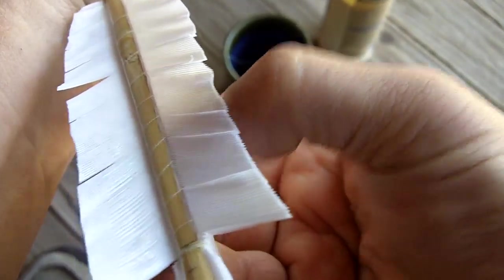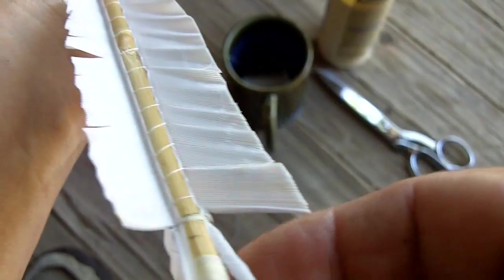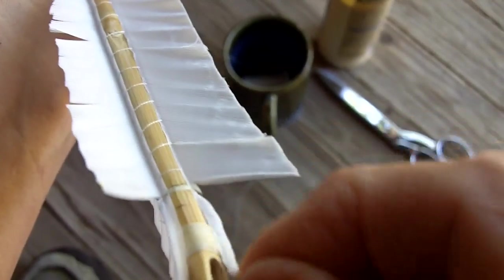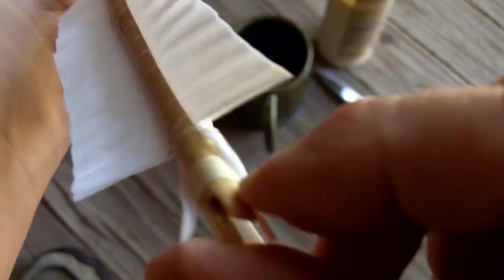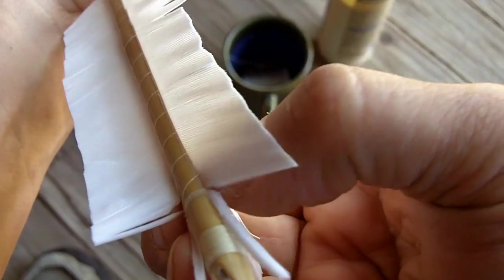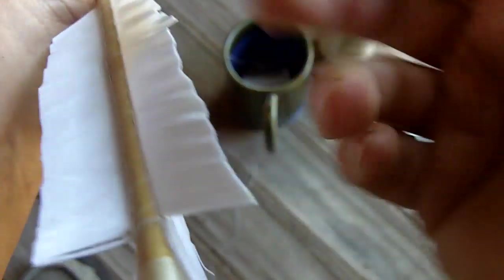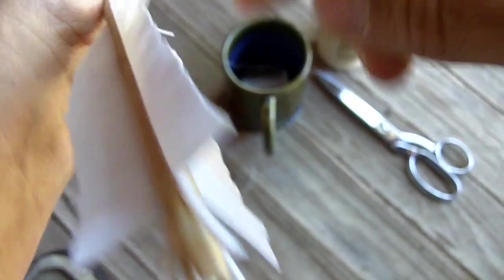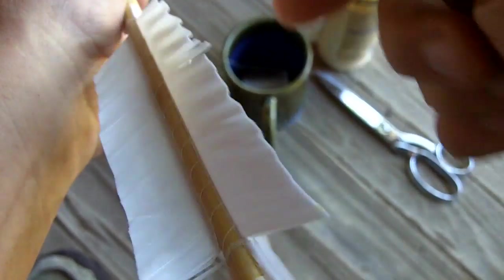But since it's not glued down, I can make adjustments to it. And then I'll just pull the back end, make it straighter. And if there's any weird areas in the fletch, I can kind of correct by just moving the main part of the vein here.